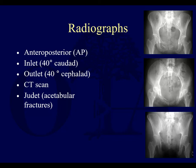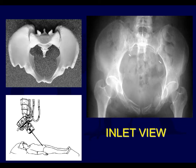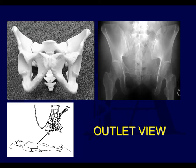For radiographs, you need to know the basic AP, inlet, and outlet views. Other imaging includes CT scans and Judet views — though Judet views are really for acetabular intra-articular fractures. The inlet view shows anterior-to-posterior displacement — if a ramus fracture is displaced anteriorly or posteriorly, you'll see it here. The outlet view shows vertical displacement — if one hemipelvis is higher than the other, you'll see it there. For intraoperative SI screw placement, the outlet view helps you visualize the sacral foramen end-on to avoid penetration.